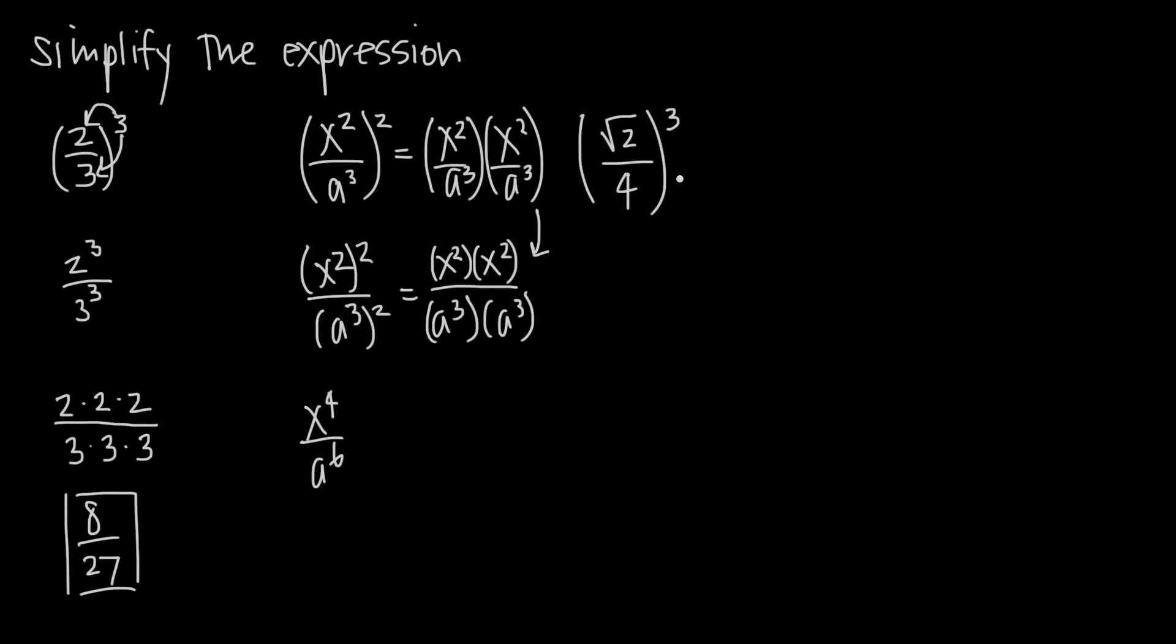Let's look at an example where we do that straight from the beginning. So here we have the square root of 2 over 4, and that whole fraction raised to the power of 3, or cubed. Well here this is going to be the same thing as square root of 2 over 4 times square root of 2 over 4 times square root of 2 over 4, because we have three factors of this fraction.